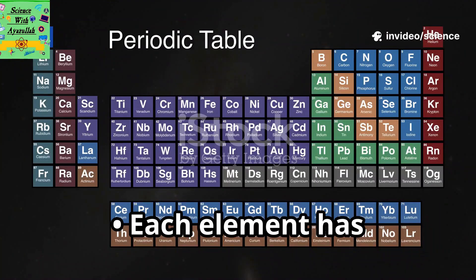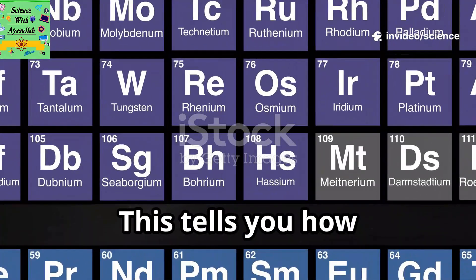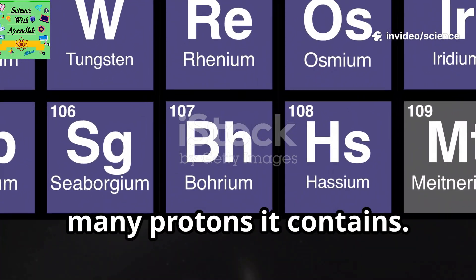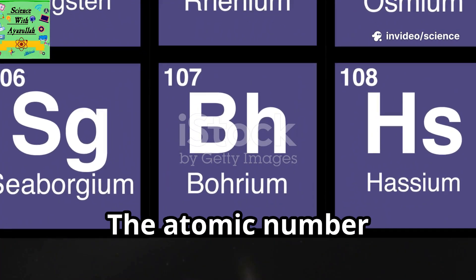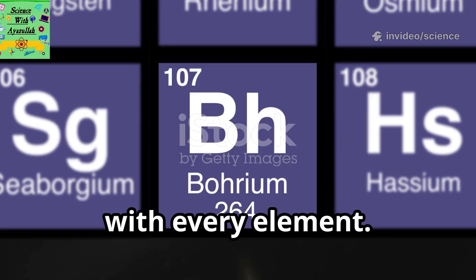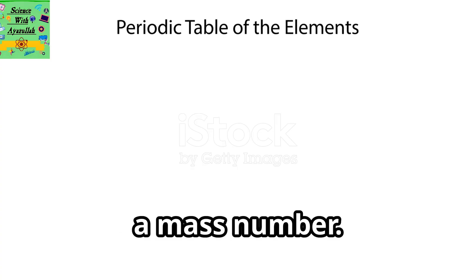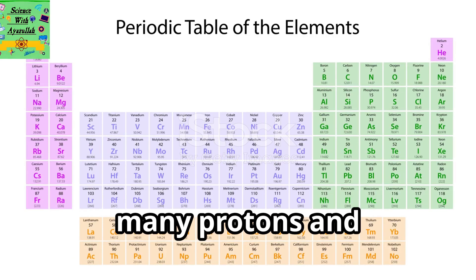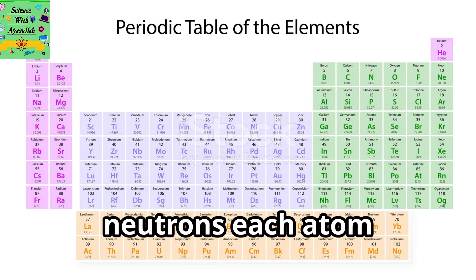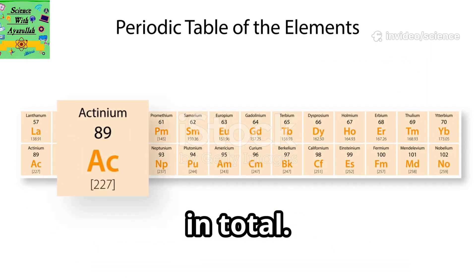Each element has an atomic number. This tells you how many protons it contains. The atomic number increases by one with every element. Each element has a mass number. This tells you how many protons and neutrons each atom in the element has in total.